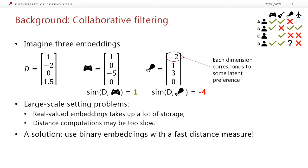However, in very large-scale settings, these types of real-valued embeddings take up a lot of storage, and distance computations may be too slow if the scale is too large. A solution to this is to use binary embeddings with a very fast distance measure, which we'll look at next.